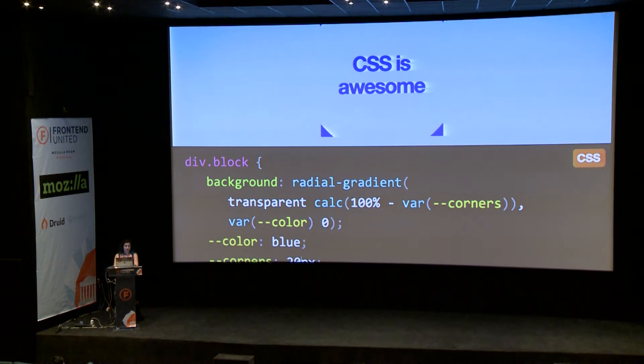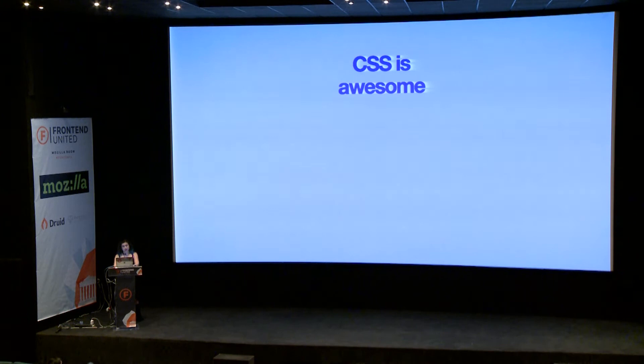The main benefit of CSS variables is that they are dynamic. I don't have to set my corners property in the rule. I can take it and put it in an inline style, and it will still work. I can adjust it, and as you can see, it works exactly the same.